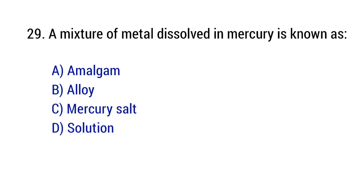Question number 29. A mixture of metal dissolved in mercury is known as? The right answer is option A: Amalgam.